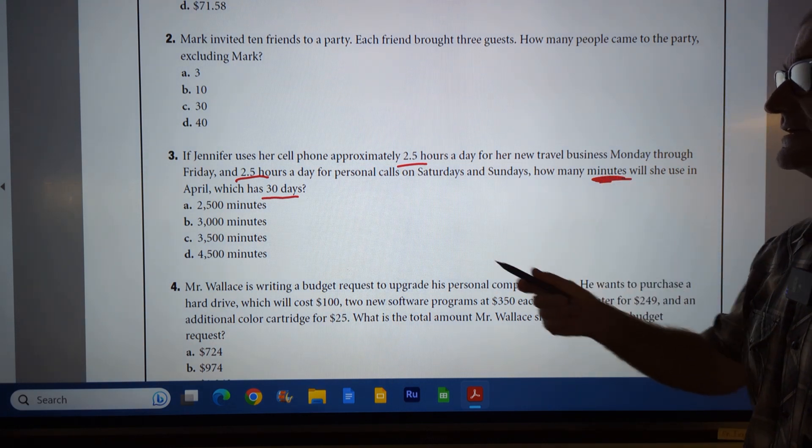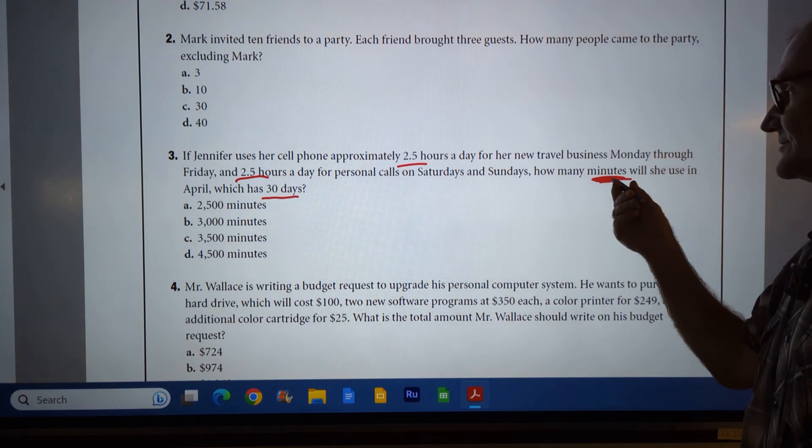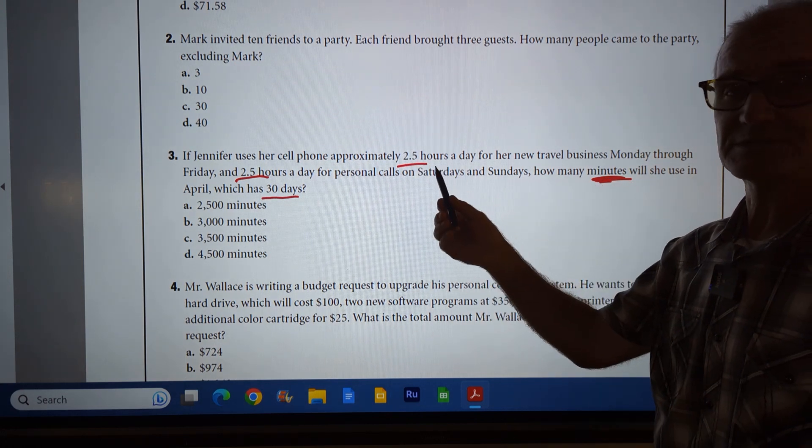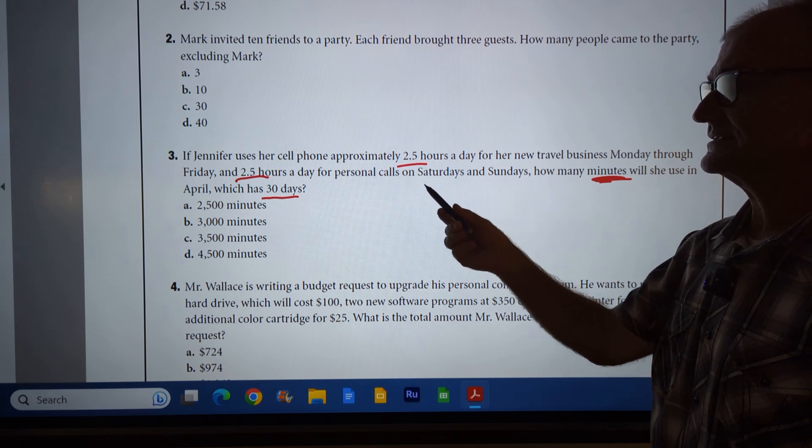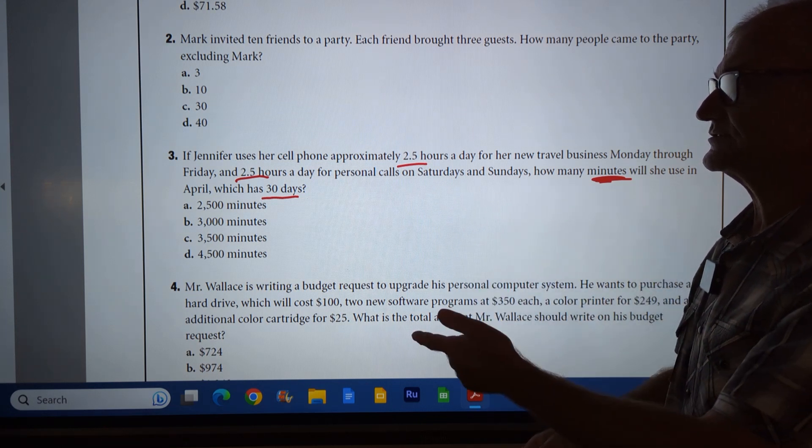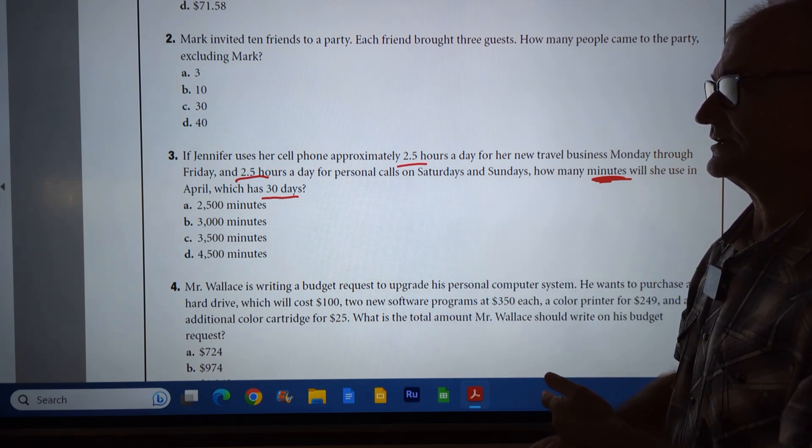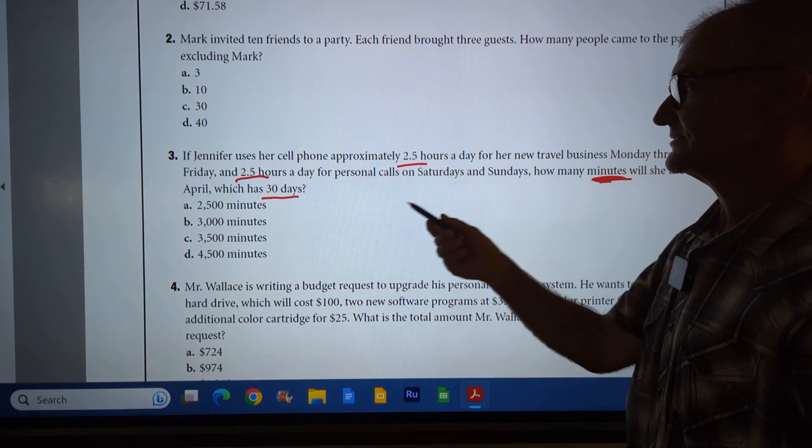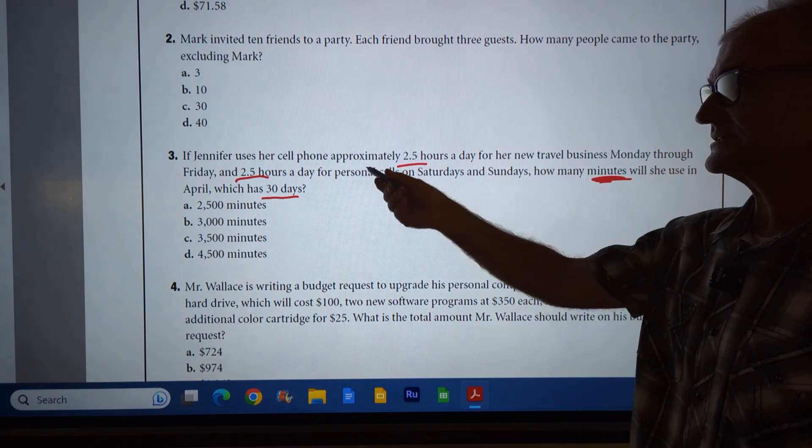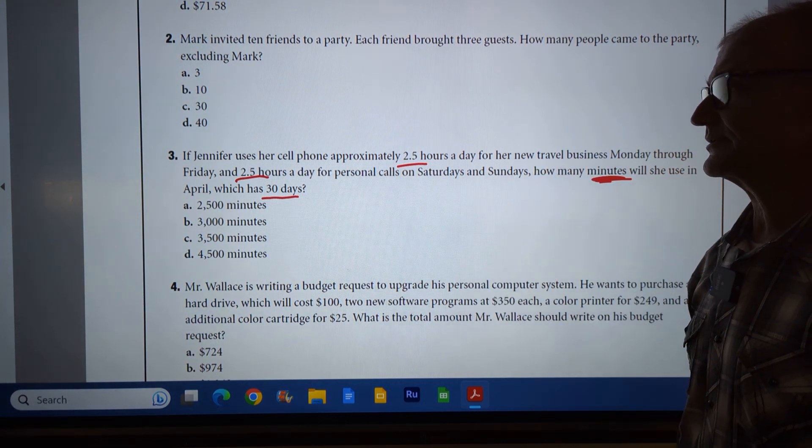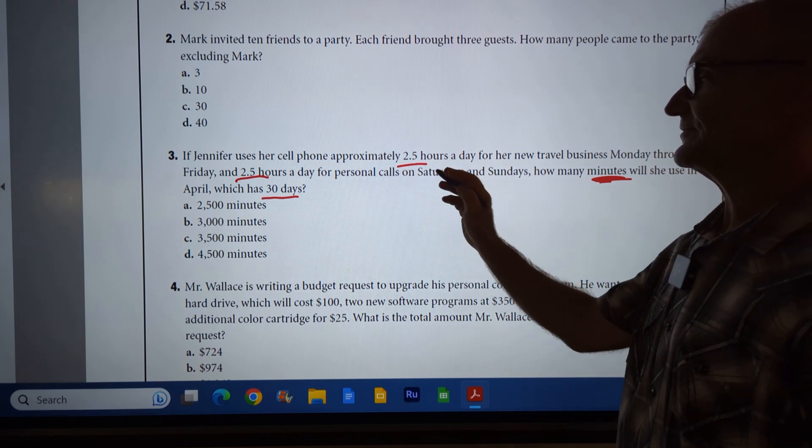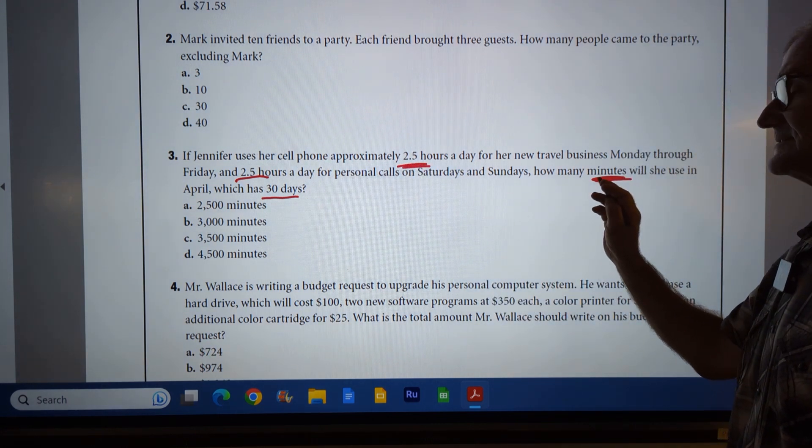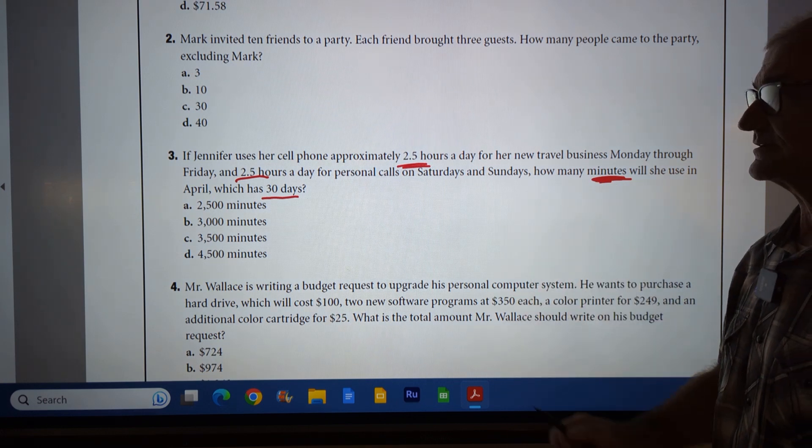This is the key word right here. These are hours, and these are minutes, so I have different units. And then the other thing, a lot of this is really just a distractor. It doesn't really matter if she's using it for business or personal calls. She is using it seven days a week for two and a half hours. So all of this travel, business, personal, those are all distractors. They're actually not part of the problem.